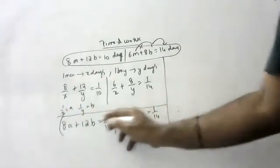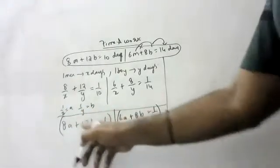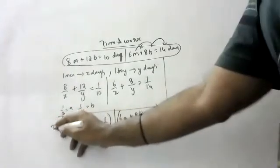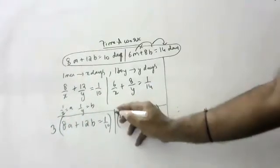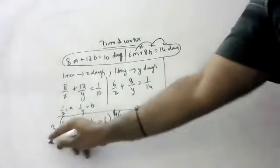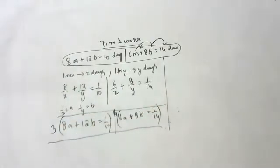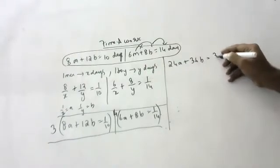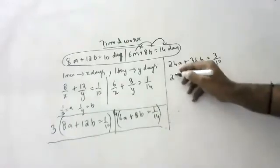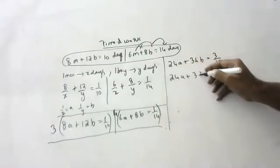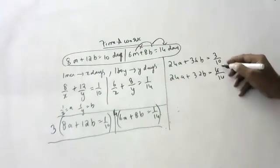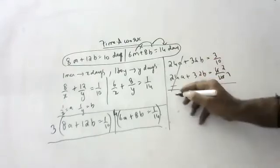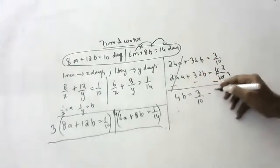To eliminate 'a', multiply the first equation by 3: we get 24a + 36b = 3/10. Multiply the second equation by 4: we get 24a + 32b = 4/14, which simplifies to 2/7. Subtracting the second from the first, the 24a terms cancel, giving: 4b = 3/10 − 2/7.